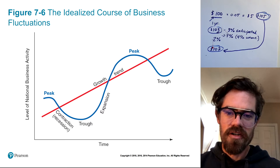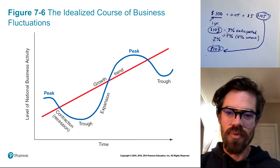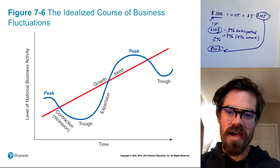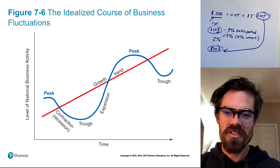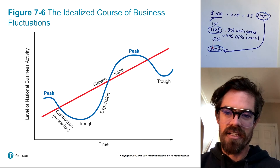There are two other parts of the business cycle: the peak and the trough. The peak is when we've reached the end of an expansion and we begin to enter a contraction and head back down. The trough is the bottom of a contraction, when we start to swing back up into an expansion. So there are four parts of a business cycle: the peak leads into a contraction, the end of the contraction is the trough, and that leads back into expansion heading towards a peak.